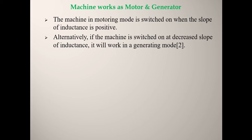This machine can be used as a motor as well as a generator. The machine is in motoring mode when the slope of the inductance is positive — that is, when inductance is increasing. Alternatively, if the machine is switched on during a decreasing inductance slope, it will work as a generating machine.